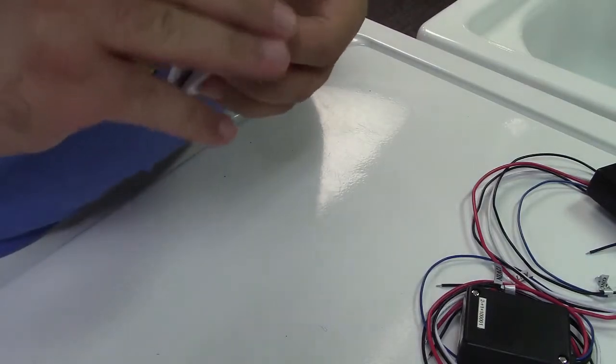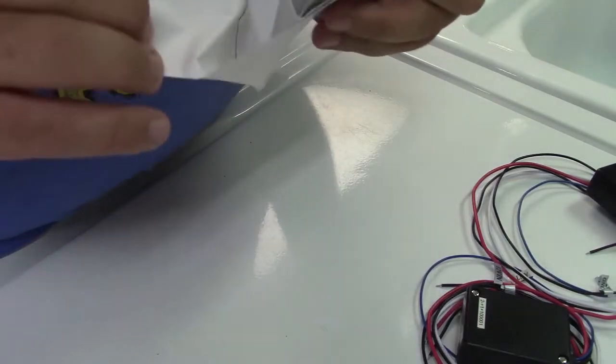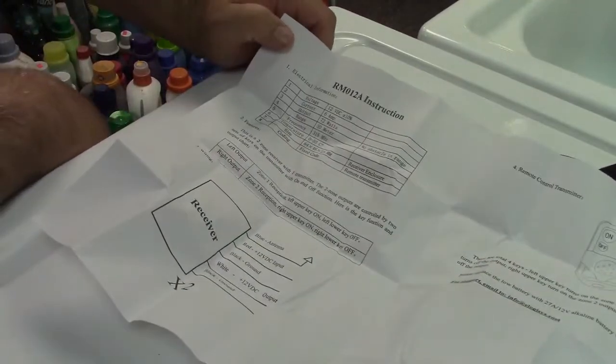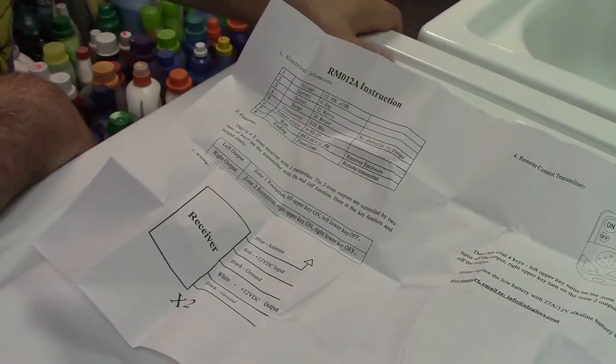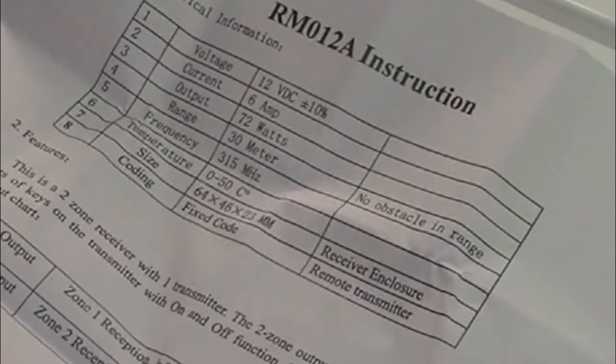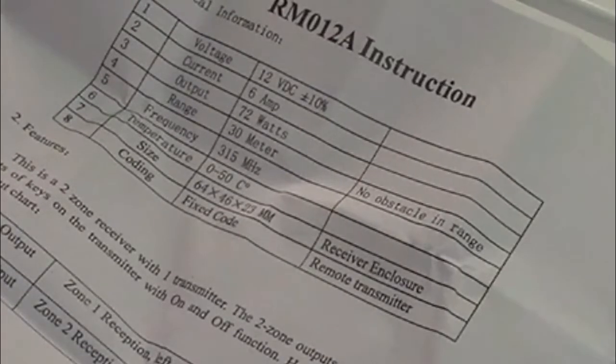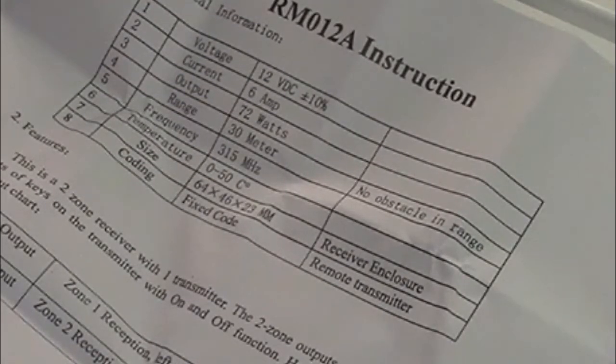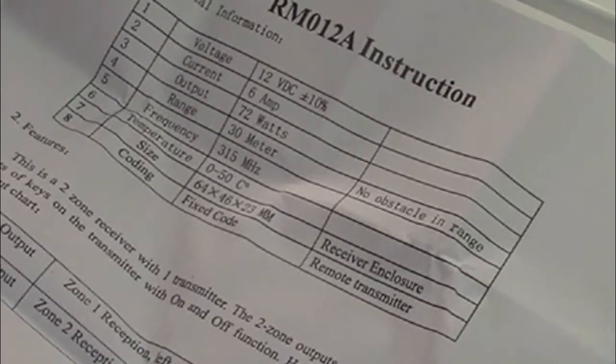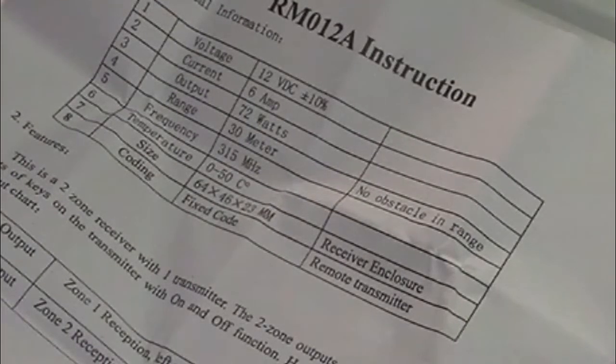Let me just see about instructions, see if they're in English or something. Never opened this, like I said. Oh, decent. So it says voltage is 12 volts DC plus or minus 10 percent. So this should be able to work in a car if you wanted it to. I'm sure it would handle that okay. Current 6 amp, 72 watt, 30 meter range with no obstacle in range, 315 megahertz, 0 to 50 C. And the size, and it's a fixed code. So it does not roll over, so it can easily be hacked.